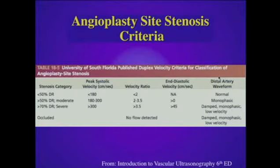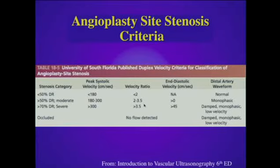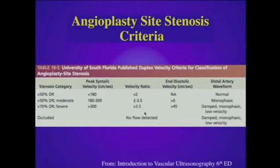Dr. Bandyk also proposed criteria for significant stenosis following angioplasty. He suggests that a peak systolic velocity between 180 and 300 centimeters per second suggests at least a 50 percent stenosis, and a velocity ratio between 2 and 3.5 would also indicate at least a 50 percent lesion. For a severe stenosis greater than 70 percent diameter reduction, they recommend looking for a peak systolic velocity greater than 300 centimeters per second, a velocity ratio greater than 3.5 to 1, and an end diastolic velocity greater than 45 centimeters per second. With a severe lesion, you would expect to see damped, monophasic, tardus waveforms distal to the stenosis.